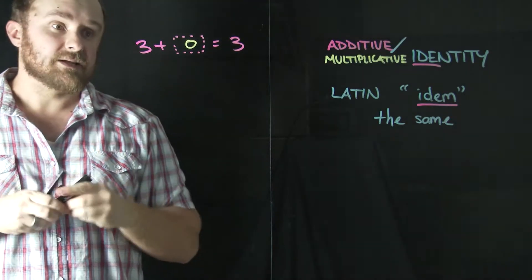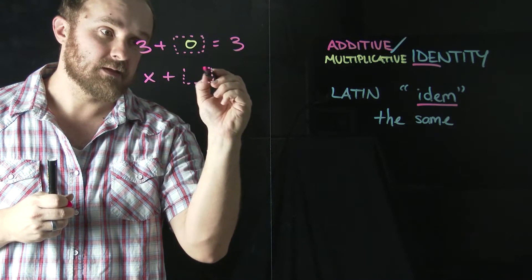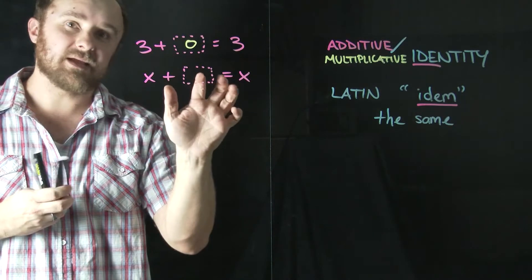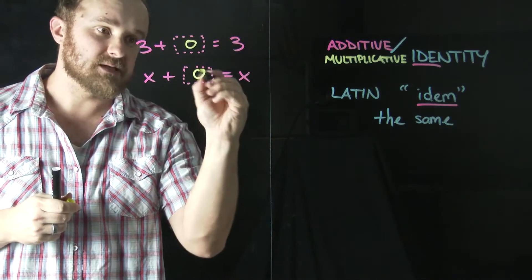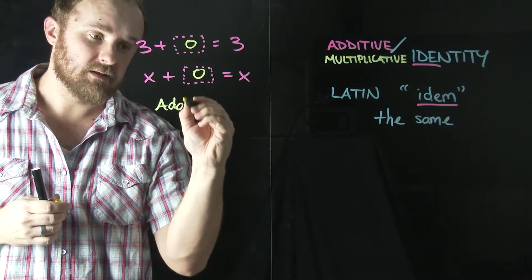And let's look at it with a variable instead of a number. So if I had x plus something, again, if I wanted this to equal just x, the only thing I could put, the only number I could put in this box would be zero. So the additive identity is zero.